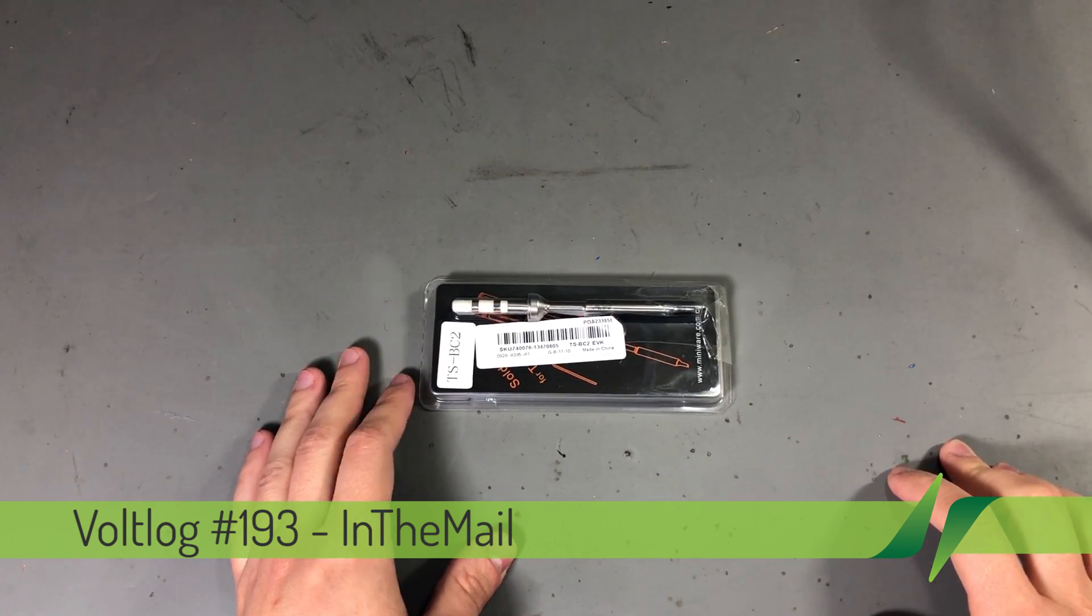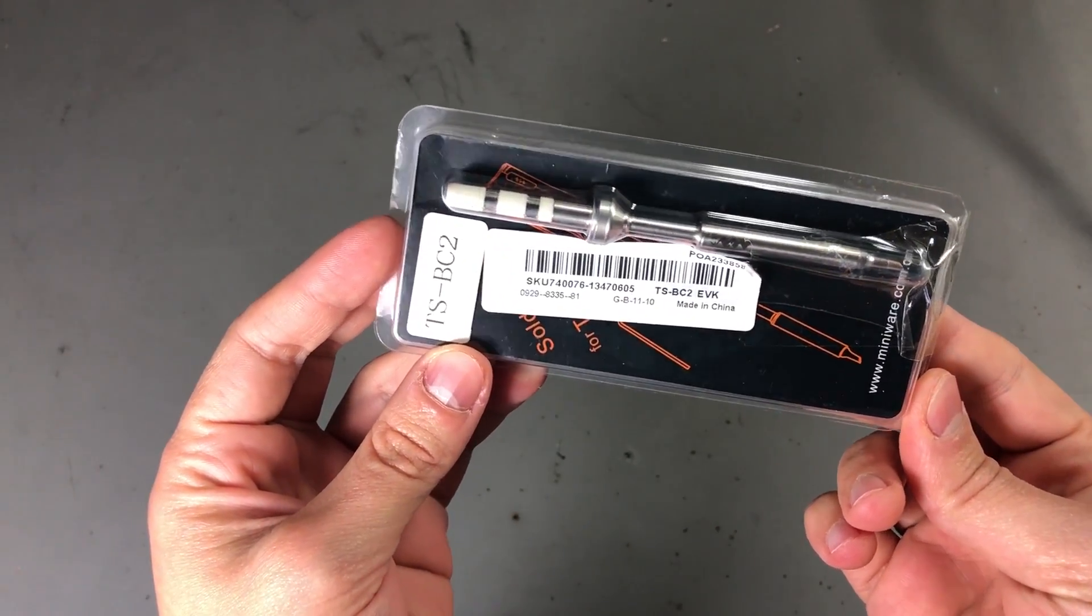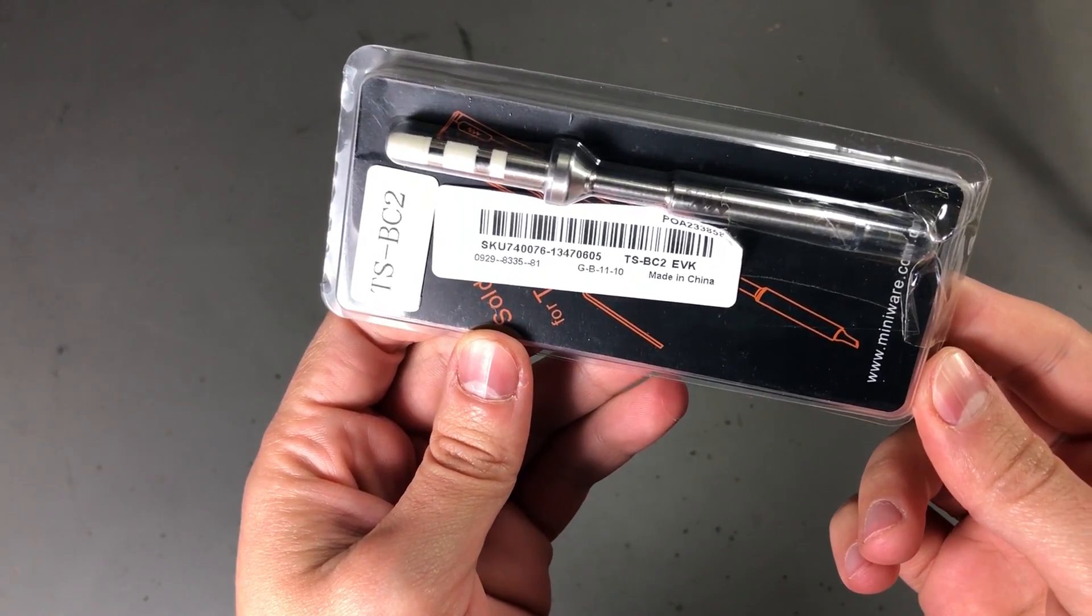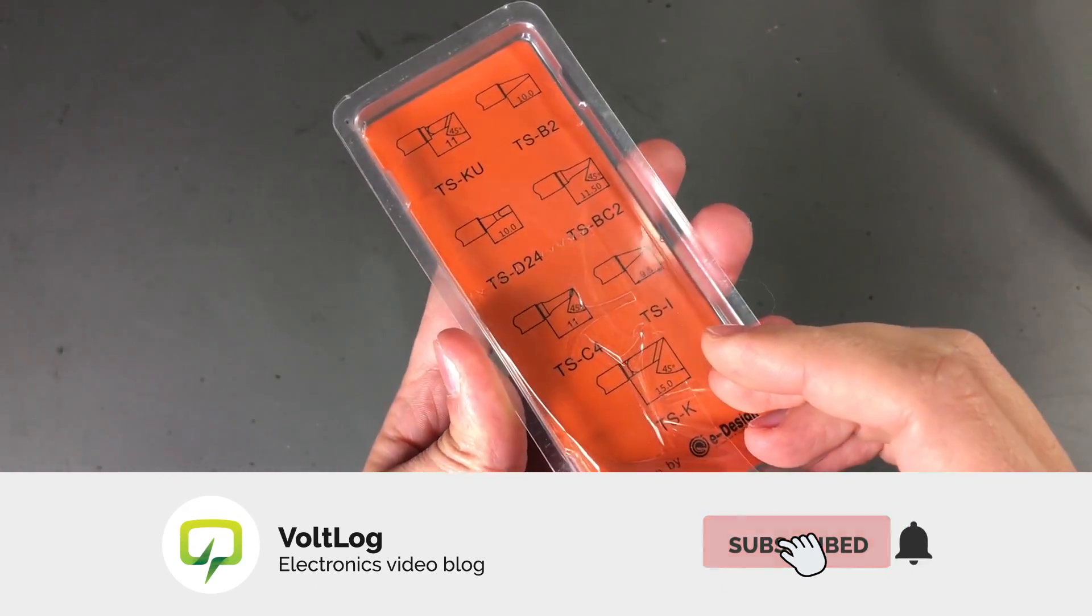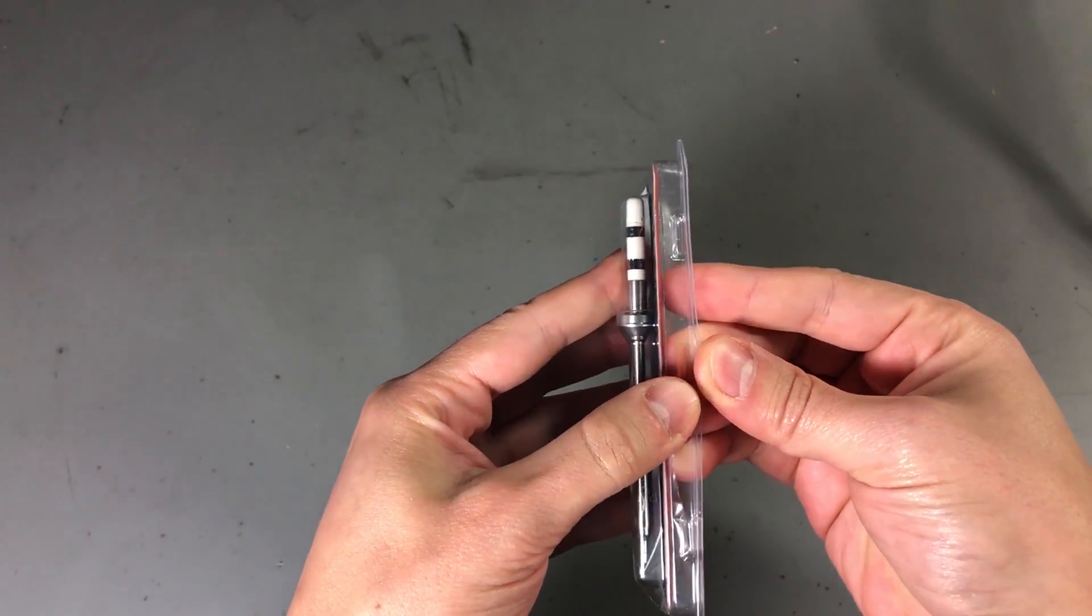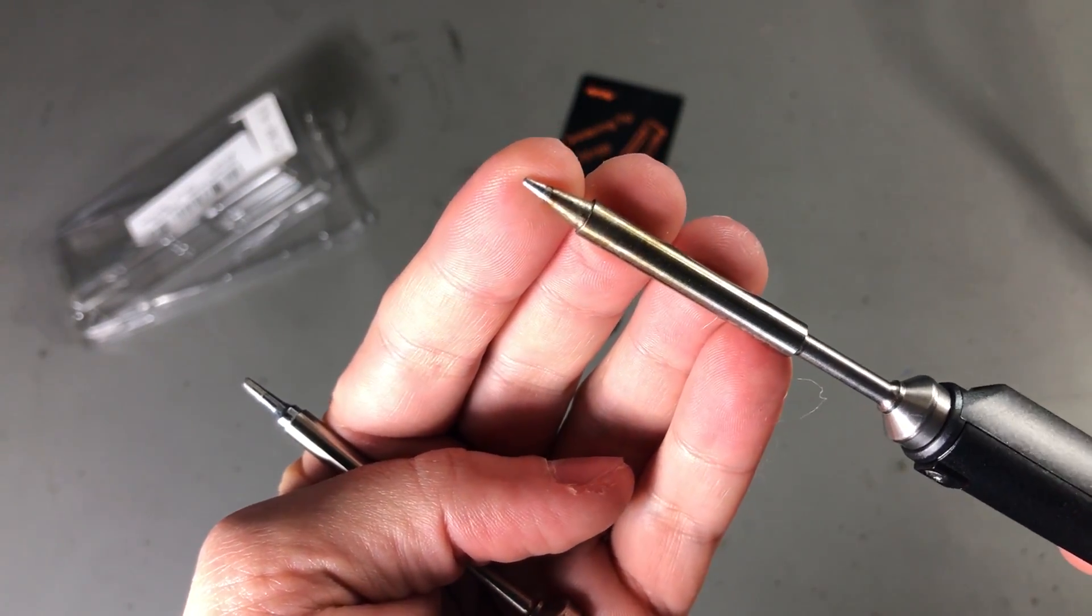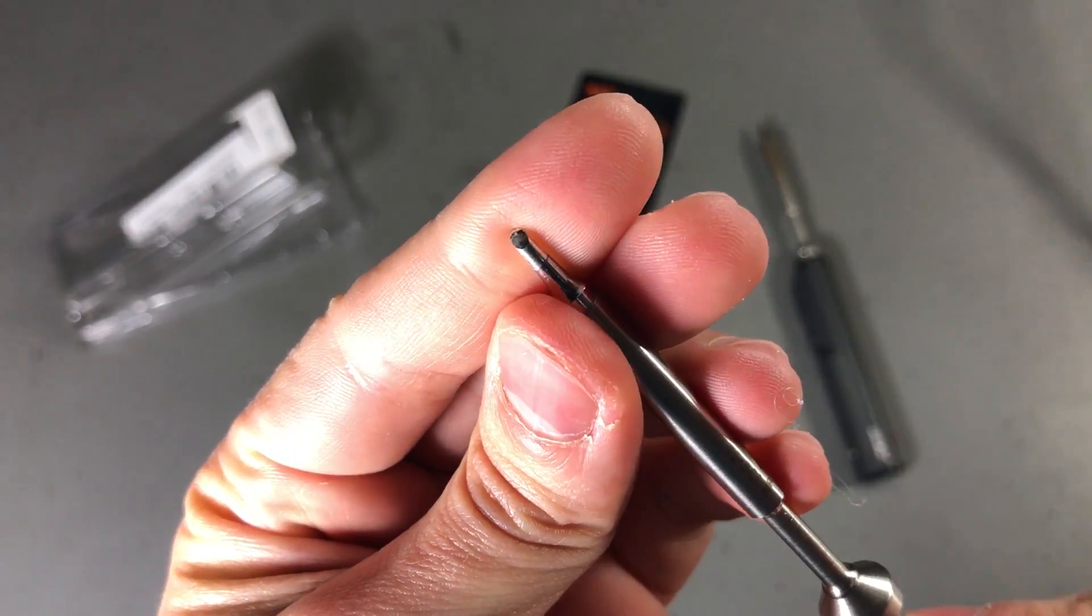We're gonna start with this soldering iron tip for the TS-100 soldering iron. So this is the TS-BC2 tip and let me take it out of its packaging so I can show you a closer look. By default you get this kind of tip and I ordered this one.